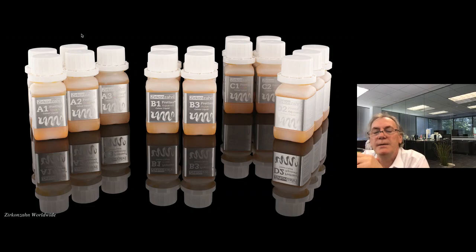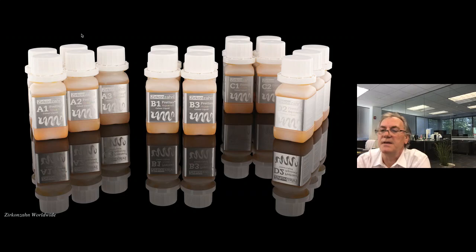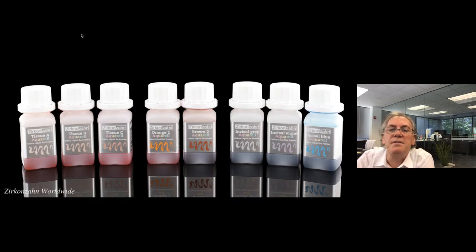So each family of zirconia with its specific characteristics call for the correspondent family of color liquids and the array of colors correspond to the Vita shade guide with multiple options of modifications. These are all the vibrant colors that we have to modify our zirconia materials from the blues to the violets to the browns, the oranges, the grays and three tissue colors.